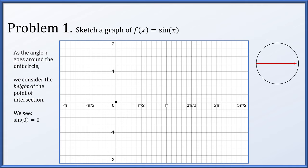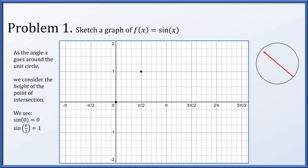Now let's rotate through the first quadrant and pay attention to the height of the point on the circle. It goes up, slows down until it reaches a maximum of 1. This is an angle of π/2. The sine of π/2 is 1, so we put (π/2, 1) into our plot. As we keep rotating, the height of the point comes back down to 0 by the time we reach an angle of π. The sine of π is 0. We put (π, 0) into our plot.